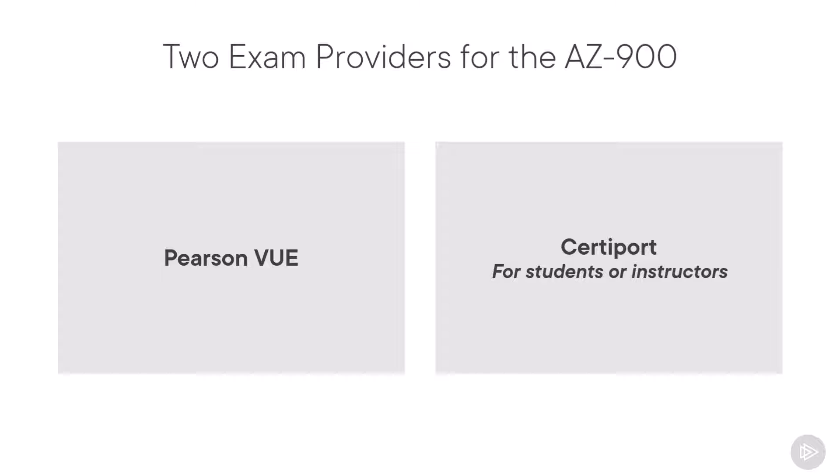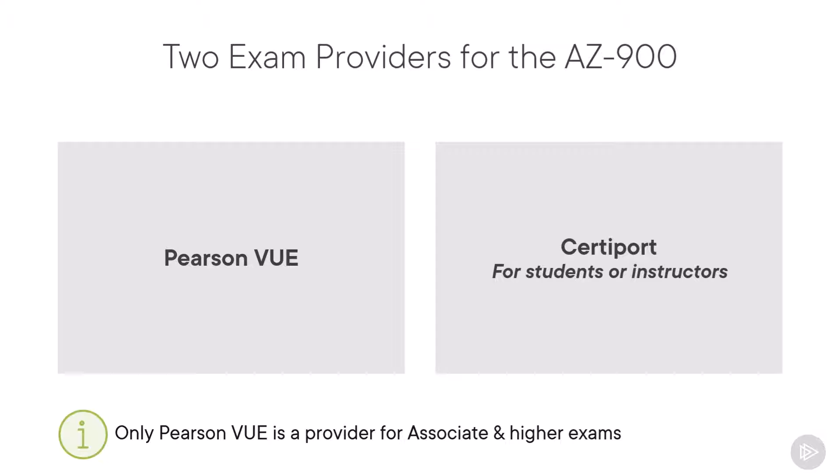such as a class requirement, I would personally go with PearsonVUE since all of the other exams above associate level — associate, expert, specialty — are only provided by PearsonVUE. This way, if you decide to pursue your certification journey further, you will already have the experience with the certification provider, rather than switching providers between your fundamental exam and your associate exams and higher.